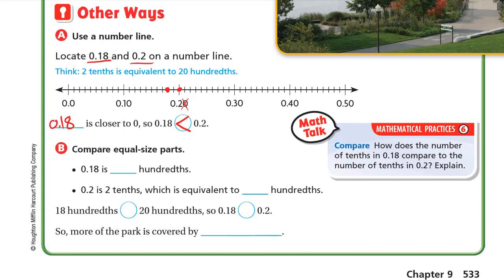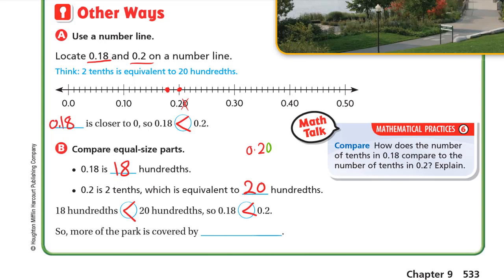Another method: compare equal-size parts. We write 18 hundredths and 2 tenths. We know that 2 tenths is equivalent to 20 hundredths — we add a zero to the right to get an equivalent decimal. Now comparing 18 hundredths and 20 hundredths: 20 is bigger than 18, so 18 hundredths is less than 20 hundredths, meaning 0.18 is less than 0.2. Therefore more of the park is covered by paved walkways, which is 0.2.